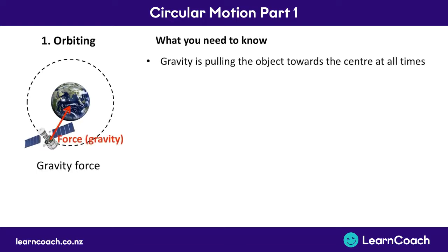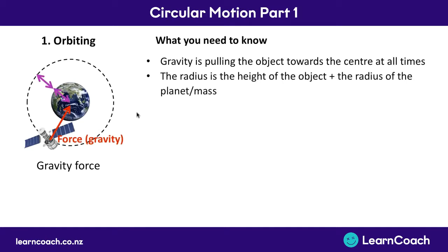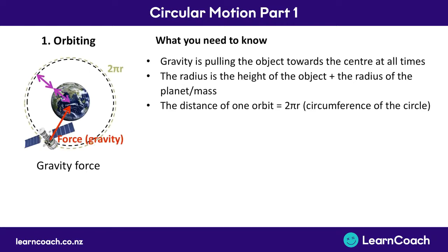For orbiting, first: gravity is the force pulling the orbiting object in towards the center of the circle — it's always gravity when orbiting. Second: the radius of your circle is not just the height of the satellite above the Earth; it's that height plus the radius of the Earth, giving your total radius. Third: the distance around the outside for one orbit is 2πr, the circumference of the circle.